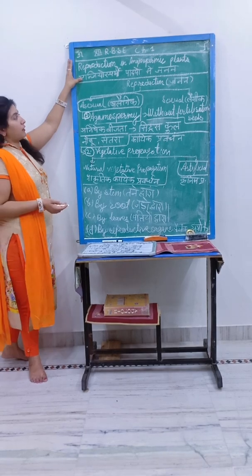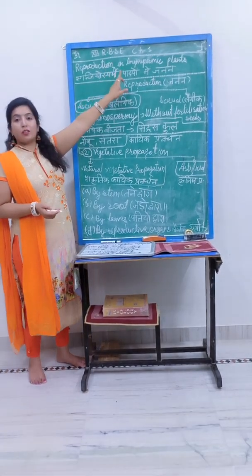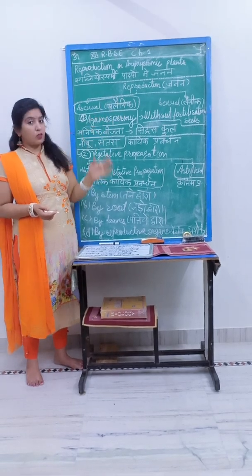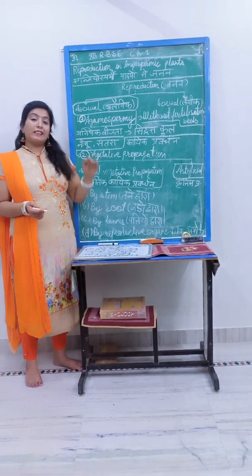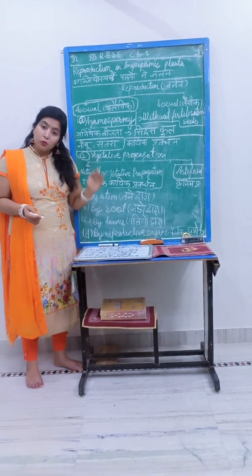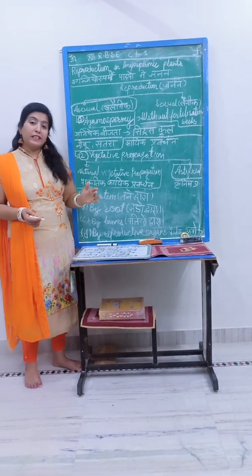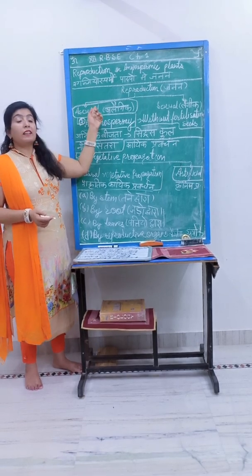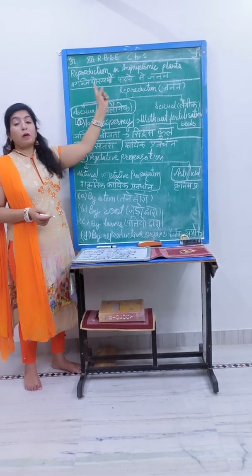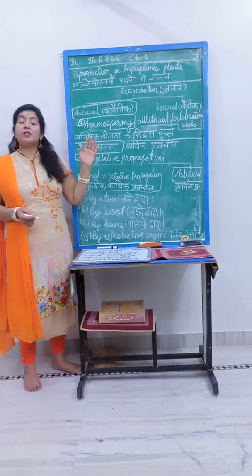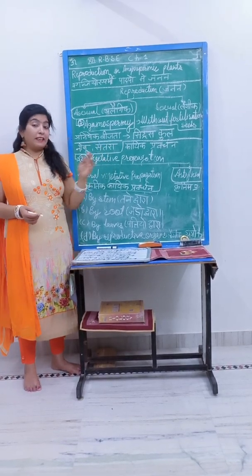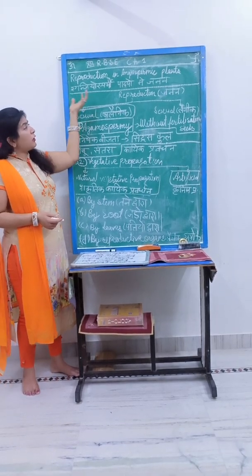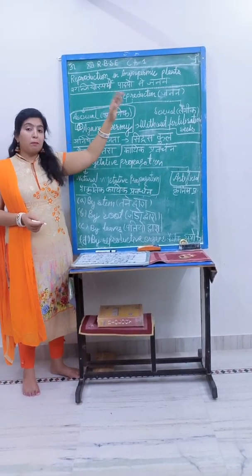The first chapter is Reproduction in Angiospermic Plants. Your 12th RBAC Biology has 42 chapters and 10 units. The first unit is the Plant Kingdom, which covers Angiospermic Plants. This unit contains 4 chapters, and the first chapter is an Introduction to Angiospermic Plants.